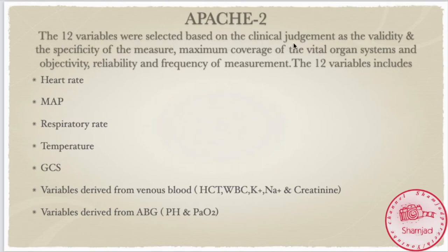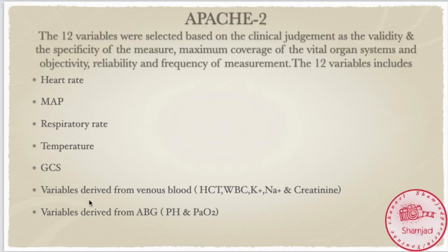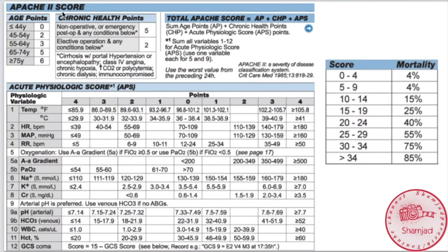The 12 variables in APACHE 2 were selected based on clinical judgment, considering validity and specificity of measurement, maximum coverage of vital organ systems, objectivity, relative reliability, and frequency of measurement. The 12 variables include: heart rate, mean arterial pressure, respiratory rate, temperature, GCS, and variables derived from venous blood such as hematocrit, WBC, serum potassium, serum sodium, and serum creatinine, as well as variables derived from ABGs such as pH and PaO2.